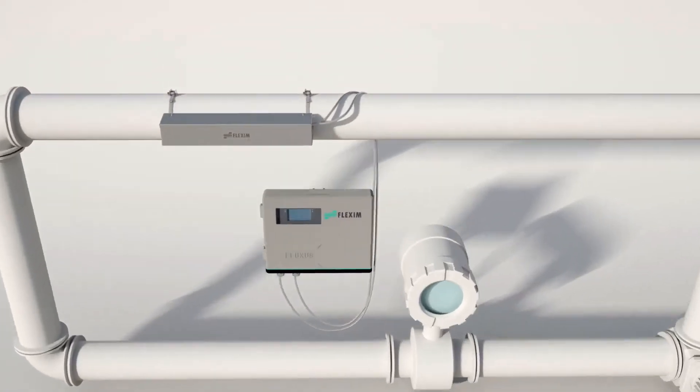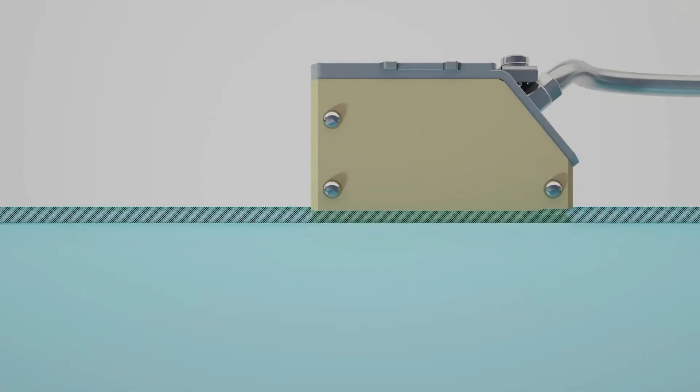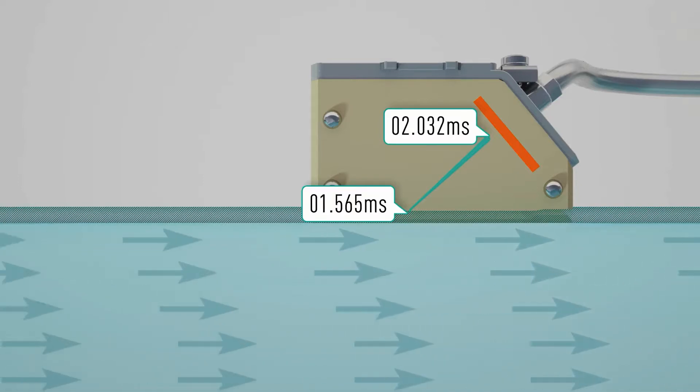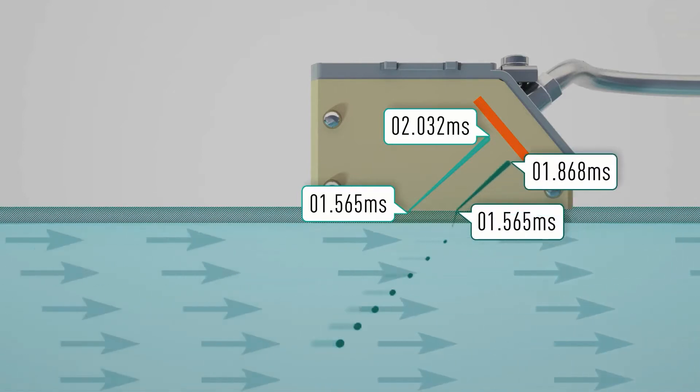Let's take a closer look at how non-intrusive ultrasonic flow meters work. The ultrasonic signal travels through the fluid, enters the transducer wedge, and contacts the piezoelement. It is important to understand that the time the ultrasonic signal spends traveling through the fluid always stays the same, independent of the fluid velocity.